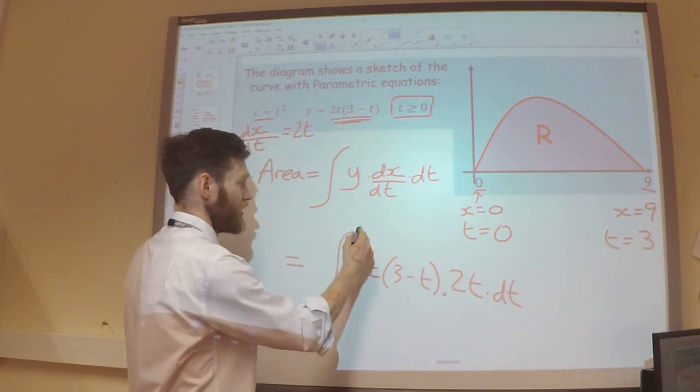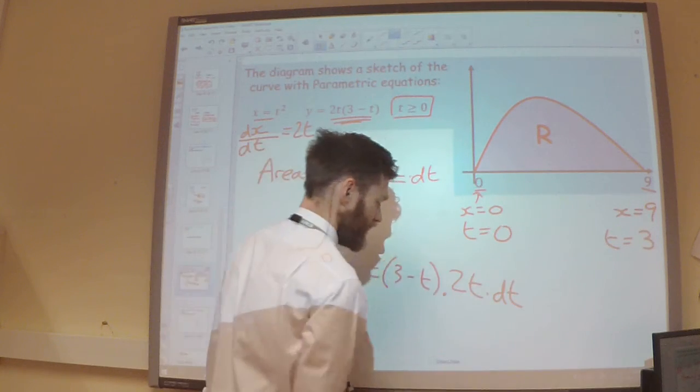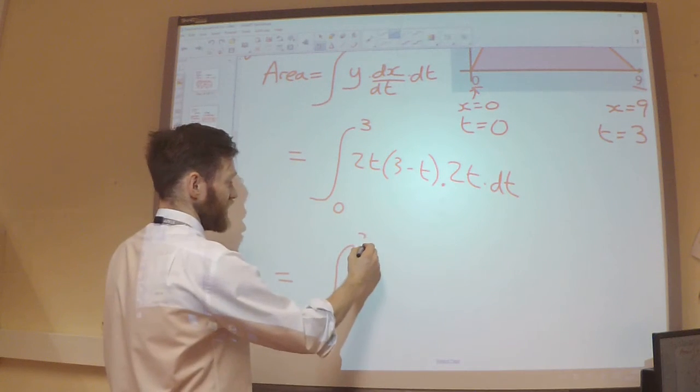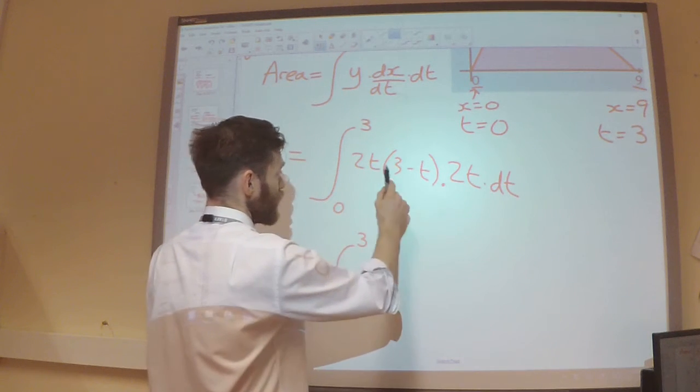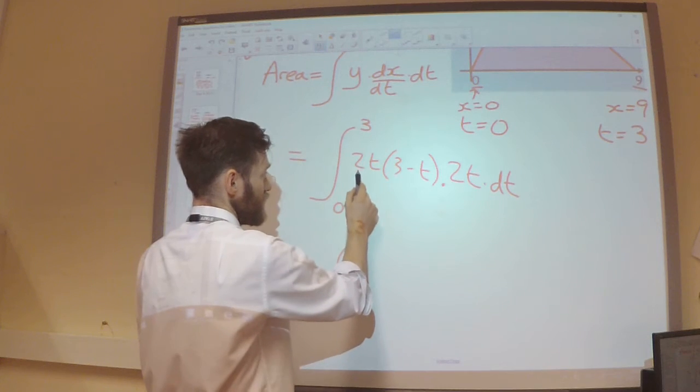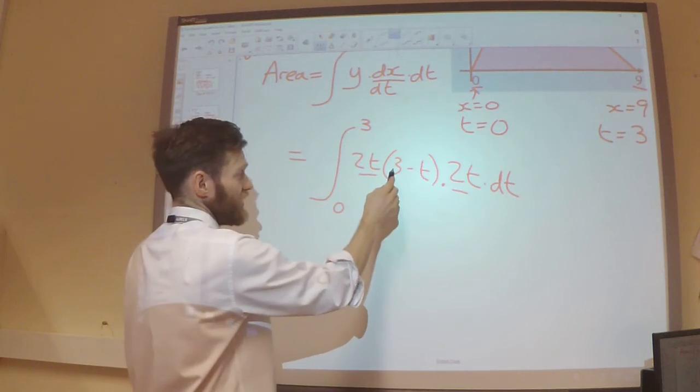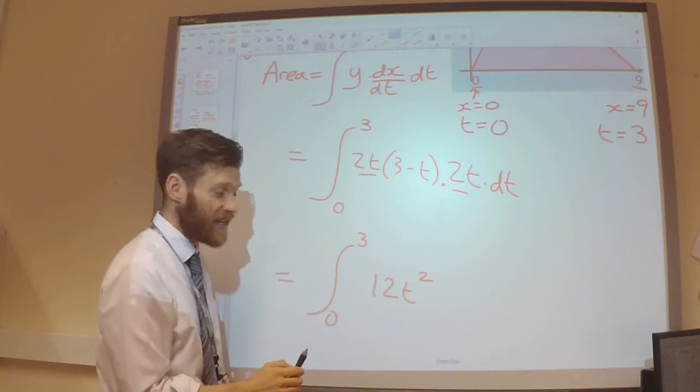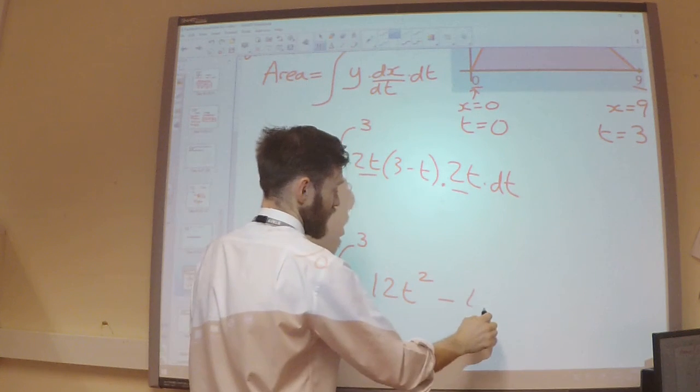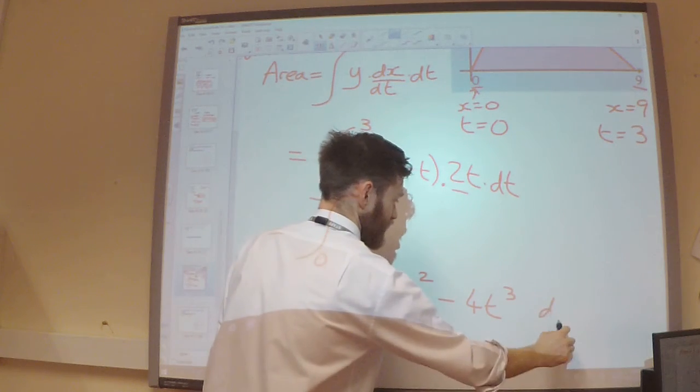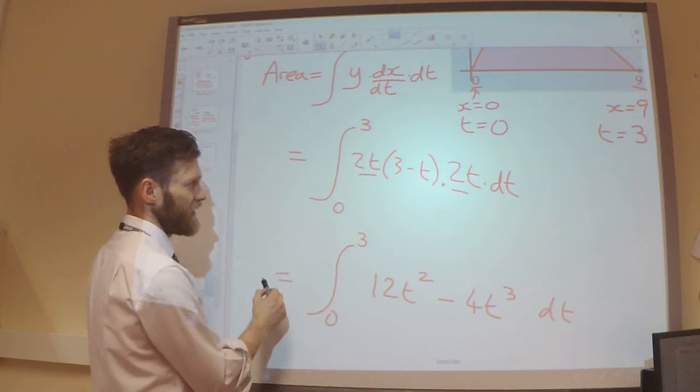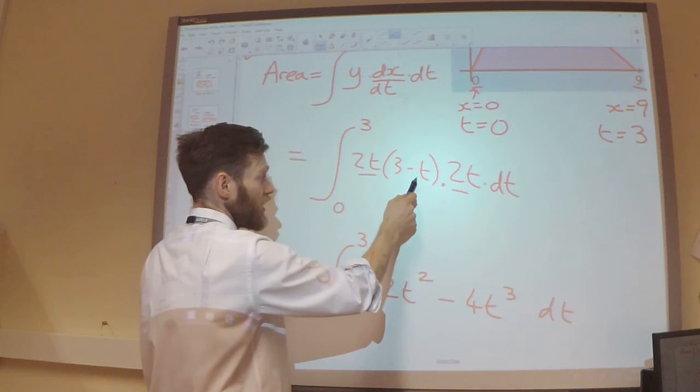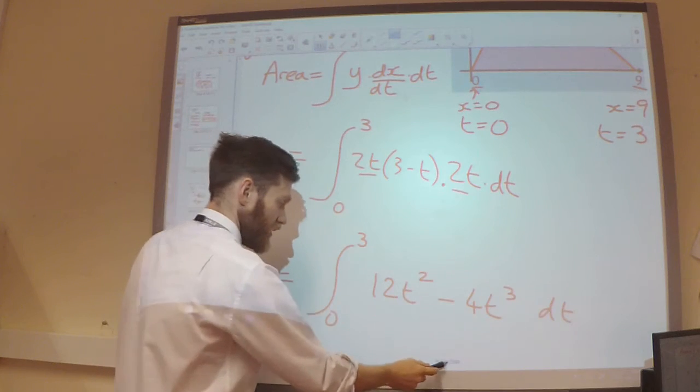So I'm going to substitute my limits in now. From 0 up to 3. And let's work this out. Let's first of all tidy up what's inside the integral. So I've got 4t squared from there multiplied by 3, so it's going to give me 12t squared. Multiplied by the minus t there is going to give 4t cubed. So checking that again, 2t and 2t makes 4t squared. That would then be a 12t squared and a minus 4t cubed.